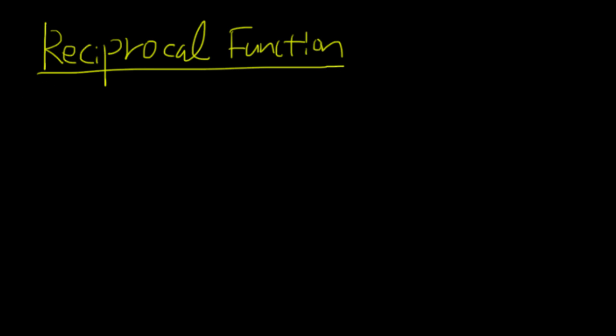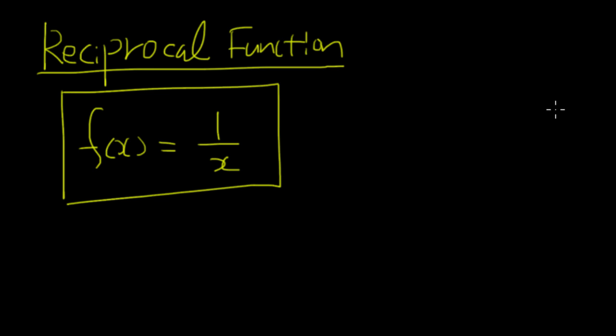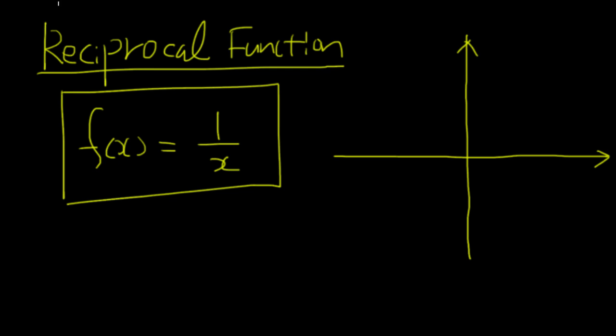The next one is the reciprocal function. Whatever goes in, it will be the reciprocal — it gets flipped — and becomes 1 over whatever goes in. That's the reciprocal function: f(x) = 1/x. The graph of the reciprocal function has two separate curves, one in each diagonal quadrant.